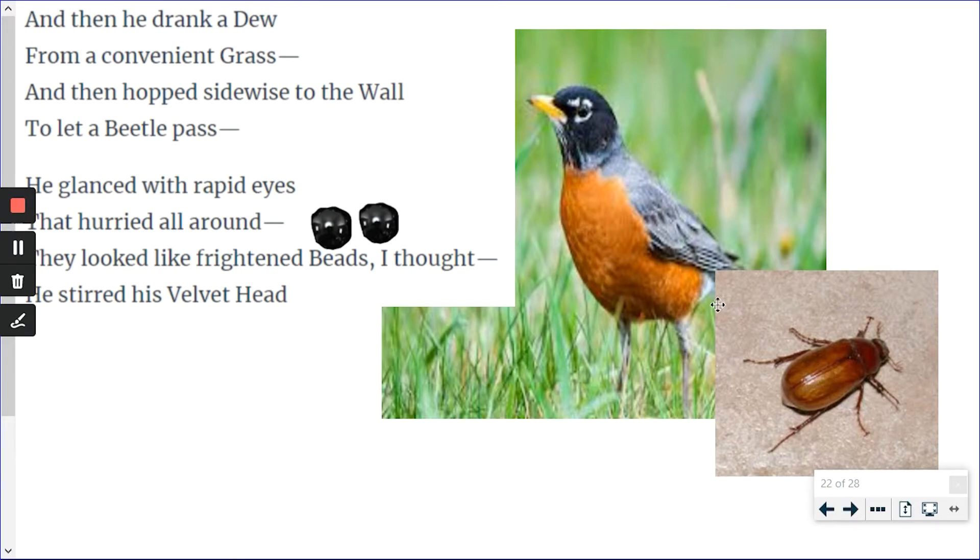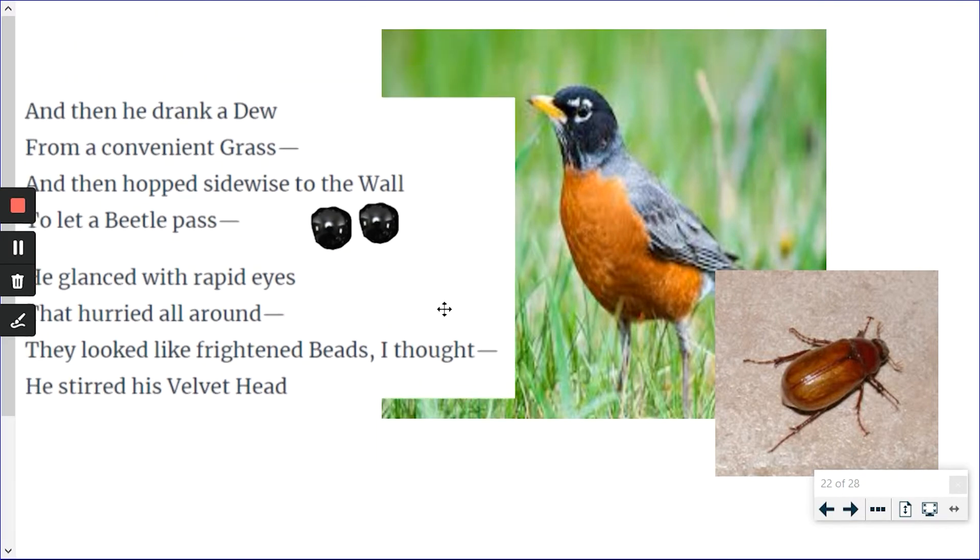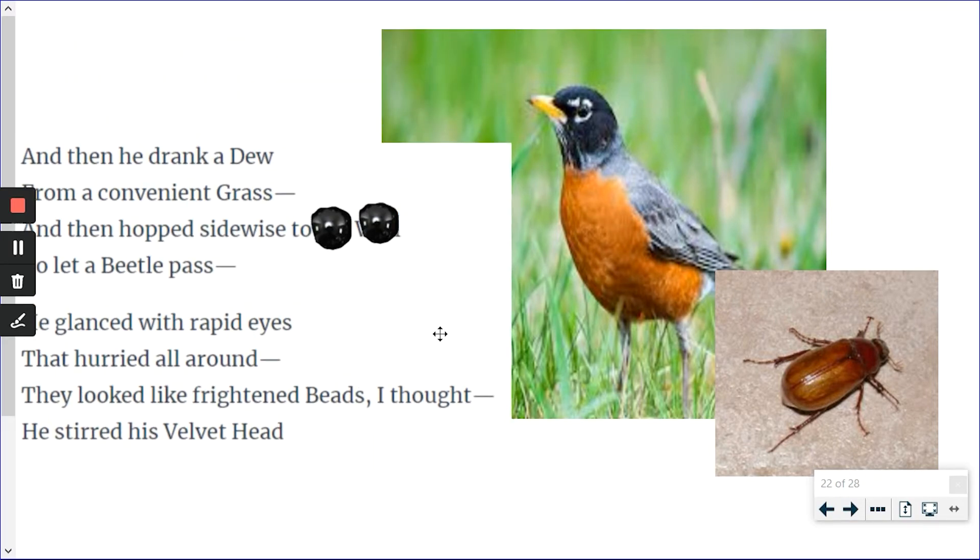Then he glanced with rapid eyes that hurried all around. They looked like frightened beads, I thought. He stirred his velvet head. Now, these frightened beads, his eyes look like this. Beads are something that go on a necklace. If you put these together, they look kind of like a necklace, but it's talking about his eyes. His eyes are looking all around and they look like frightened beads. You know that birds are always looking around trying to spot some danger. And then he stirred his velvet head. His head is just very soft.